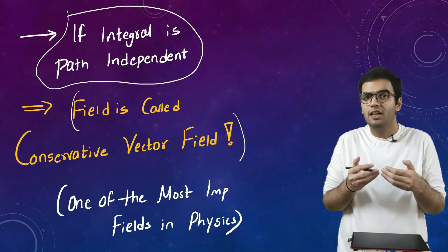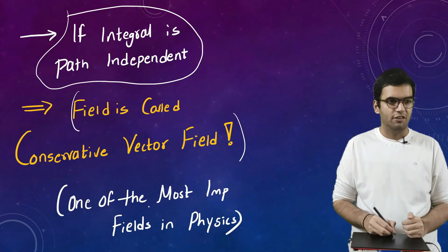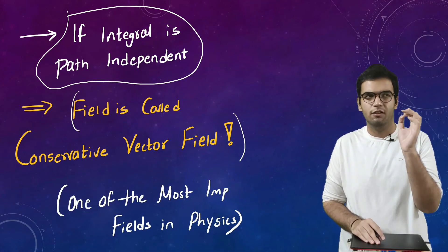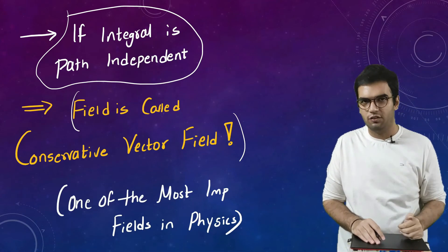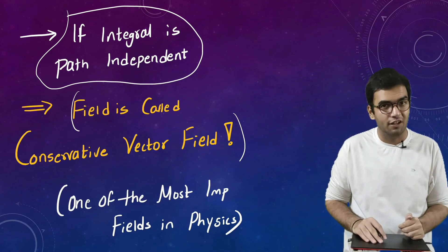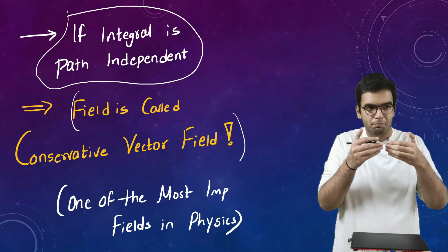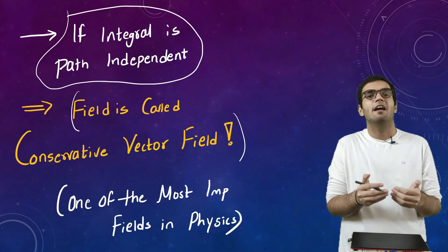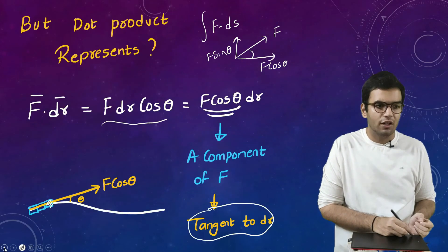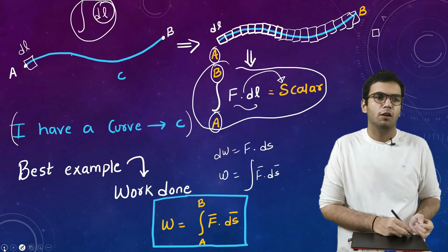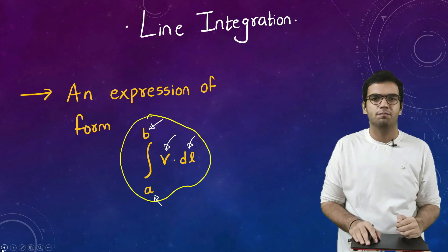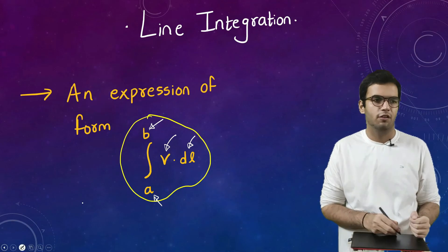So if our integral is path independent then that field is called as conservative vector field. The field is called as conservative vector field and this is one of the most important fields which we deal with in physics. Okay, our whole electrodynamics is based on such conservative vector fields. So by the end of this topic we have concluded all core concepts which are needed to study line integration from the perspective of a physicist in detail. So let us now try to do some numericals for the same concept.